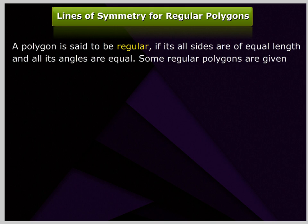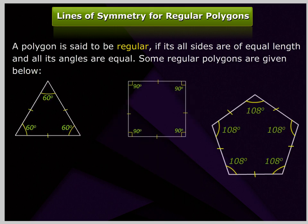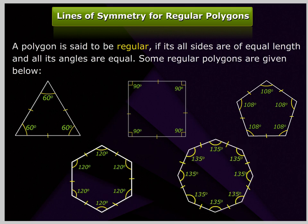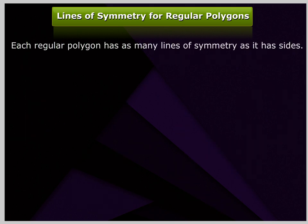Some regular polygons are given below. Each regular polygon has as many lines of symmetry as it has sides.